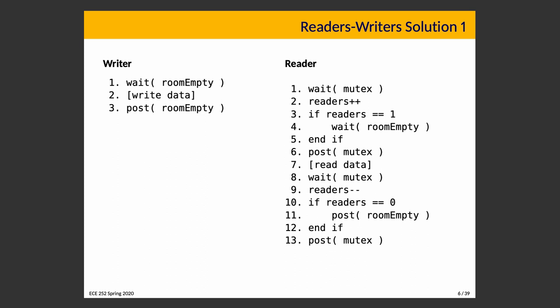If we are the first reader, we call wait on room_empty at line four. If the room is currently empty, we proceed immediately, but we have to some extent locked the room, which would prevent a writer from entering — that's what we want because we are a reader. If we are not the first reader, we skip over that and proceed immediately to reading some data. When the last reader leaves, it posts on room_empty, potentially unblocking a writer if one was waiting.